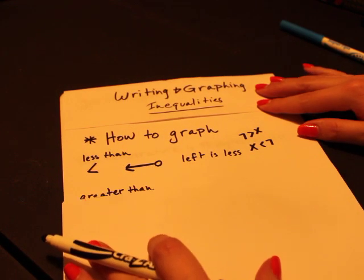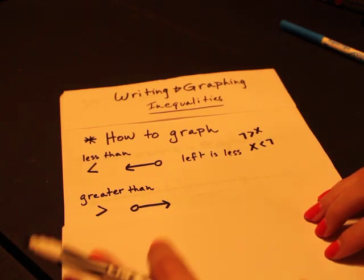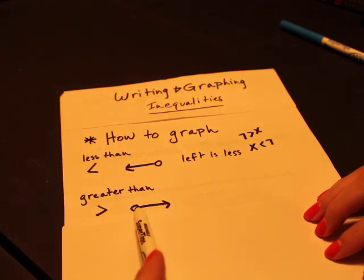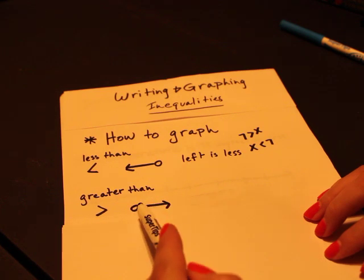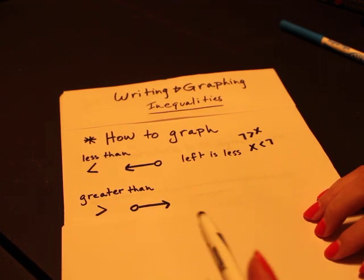Our next one is greater than. If you've got an inequality where your variable is greater than some number, you're going to start again with your open circle because we're just starting at that value, not including it, and you're going to shade to the right because all numbers greater than it are going to be to the right on the number line.